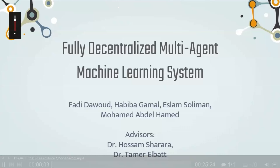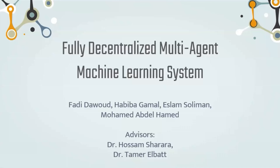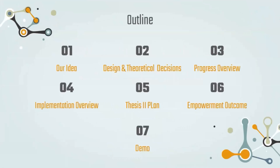Hello everyone, this is Islam Sulaiman, whose teammates are Fadi Daroud, Hadiba Gamal, and Mohammal Abdelhamid, also known as Oscar. In our second and final progress presentation for this semester, we're going over a quick recap of our idea, our design and theoretical decisions, a progress overview of what we have done on the project so far, followed by some implementation details, then what we plan to do in thesis 2 this upcoming semester, what we expect are the outcomes, and finally the demo of our project so far.